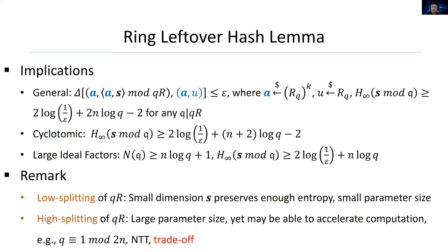On the other hand, high splitting of qR corresponds to large parameter size. But it may be able to accelerate computation. For example, when Q equals 1 mod 2n, we can apply the NTT library to accelerate the computation. So there is a trade-off between the efficiency of space and computation when applying our lemma.